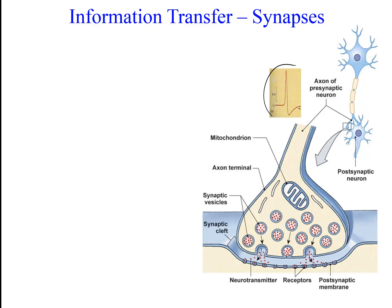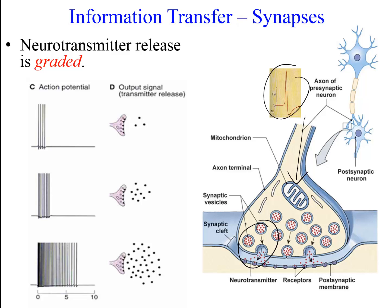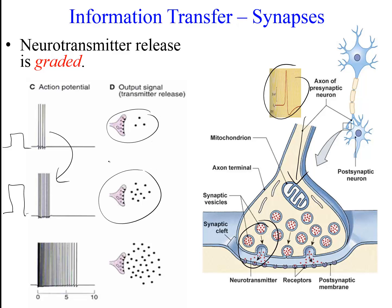Recall that when an action potential reaches the synaptic terminal, it triggers the release of neurotransmitter. Neurotransmitter release is also graded and is determined by the frequency of action potentials and the duration of the spike train. The higher the frequency of action potentials, the more neurotransmitter is released. The longer the duration of the spike train, the longer neurotransmitter is released. Comparing a lower versus higher amplitude stretch, producing lower and higher frequencies of action potentials, we get less or more neurotransmitter released. With a longer duration stimulus, action potentials are produced for a longer period, and neurotransmitter is released for a longer period of time.